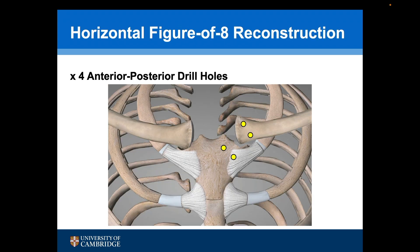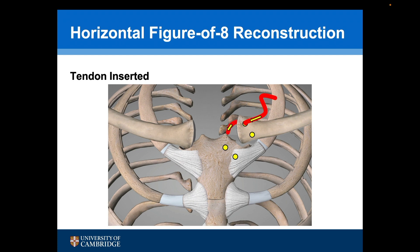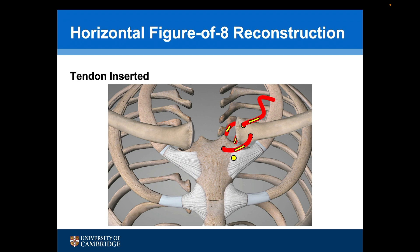Two anterior-to-posterior 3.5mm drill holes are made in the medial end of the clavicle and the sternum. A hamstring tendon allograft is then passed through the superior clavicular hole from anterior to posterior, retrieved, and then passed through the superior sternal drill hole from posterior to anterior. The tendon is then passed back through the inferior clavicular hole from anterior to posterior, and then through the inferior sternal drill hole from posterior to anterior.